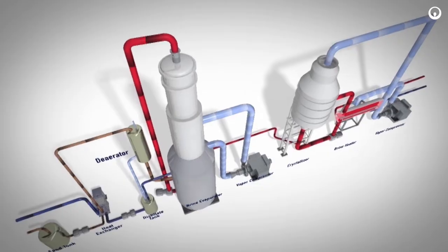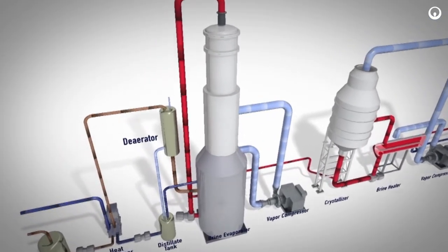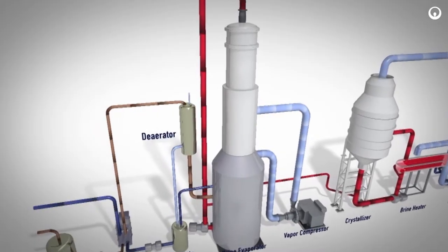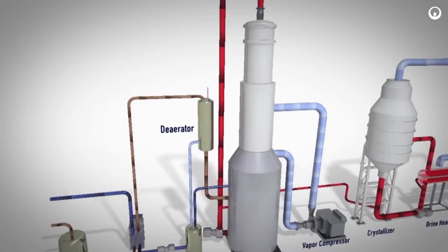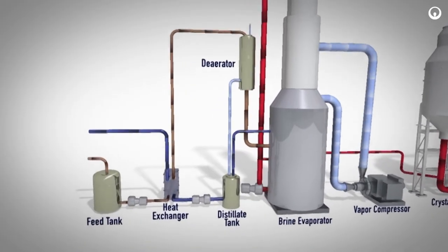The standard ZLD system consists of a vertical tube falling film evaporator or brine concentrator followed by a forced circulation crystallizer, enabling you to eliminate liquid waste streams from your plant and produce high purity water for reuse.